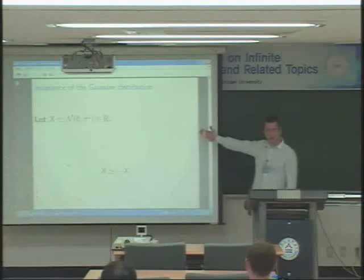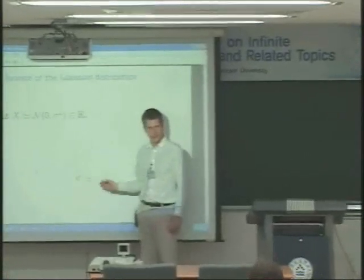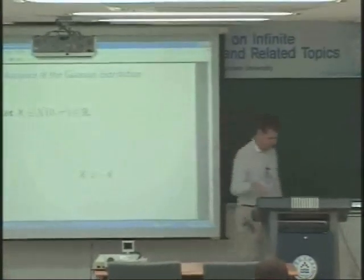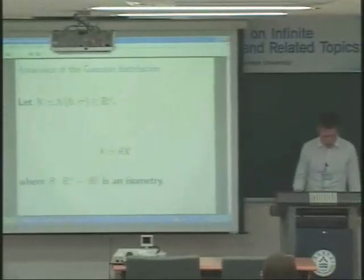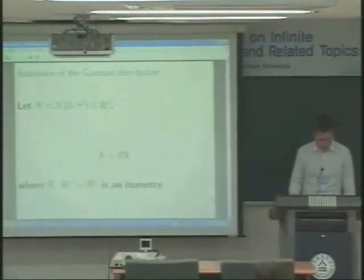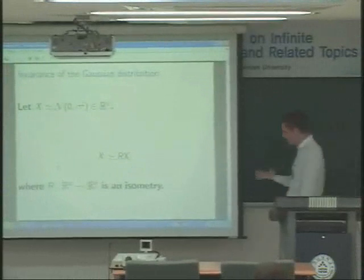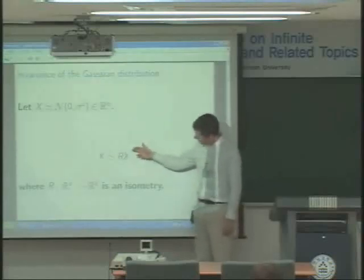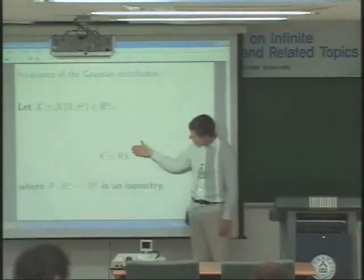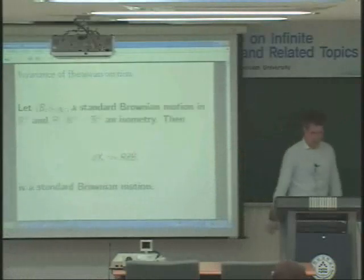Consider a simple Gaussian random variable. Of course, we know that in distribution, x has the same distribution as minus x. This is obvious. More interesting, we have invariance of the Gaussian distribution by rotations. At least when r is an isometry of R^d, the rotated x still has the same distribution as x.